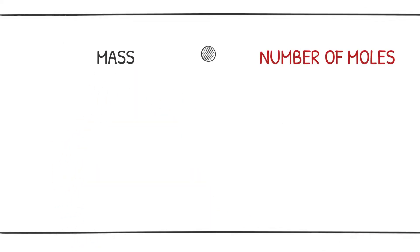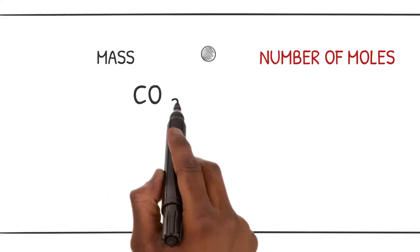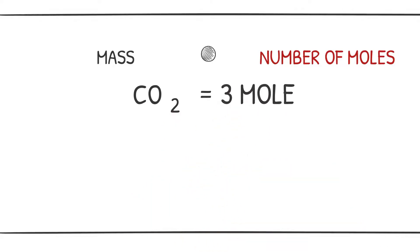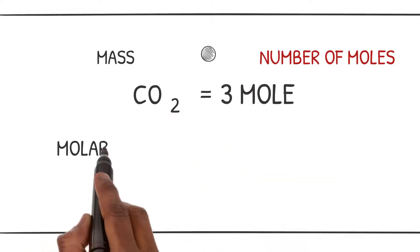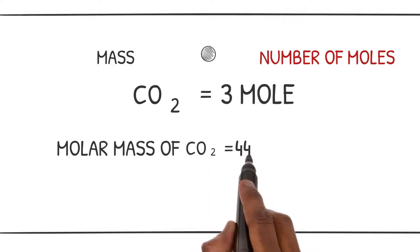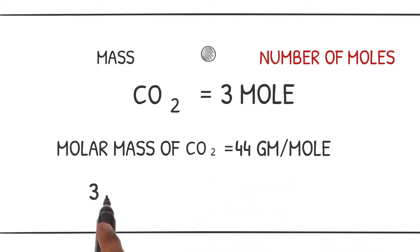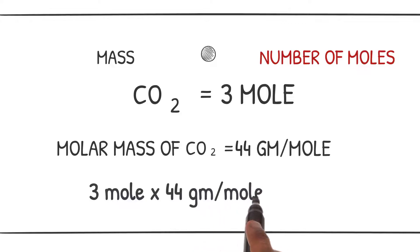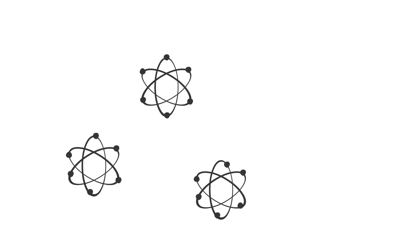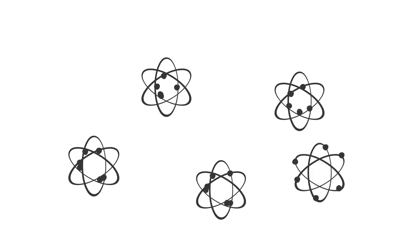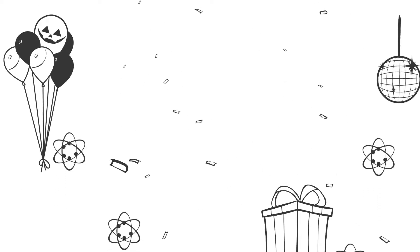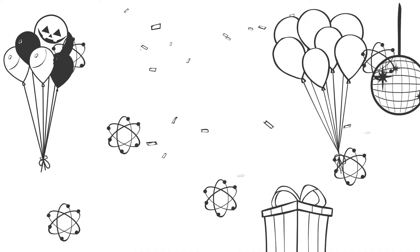We can also calculate the mass when we know the number of moles of molecules. Let's say we have three moles of carbon dioxide, CO2. The molar mass of carbon dioxide is 44 grams per mole, so three moles × 44 grams per mole gives us a mass of 132 grams.